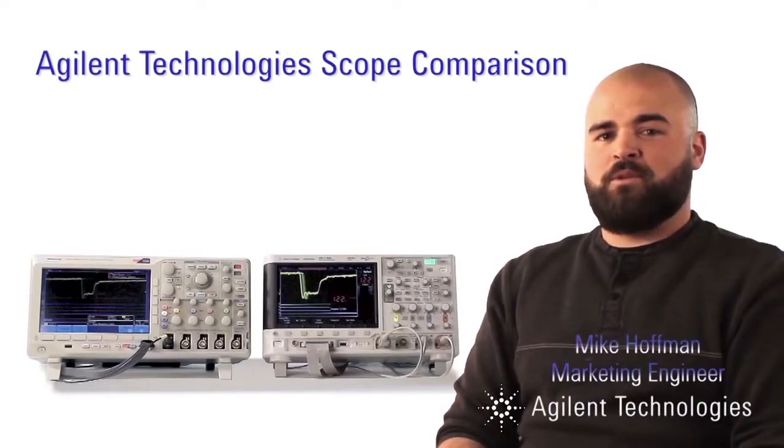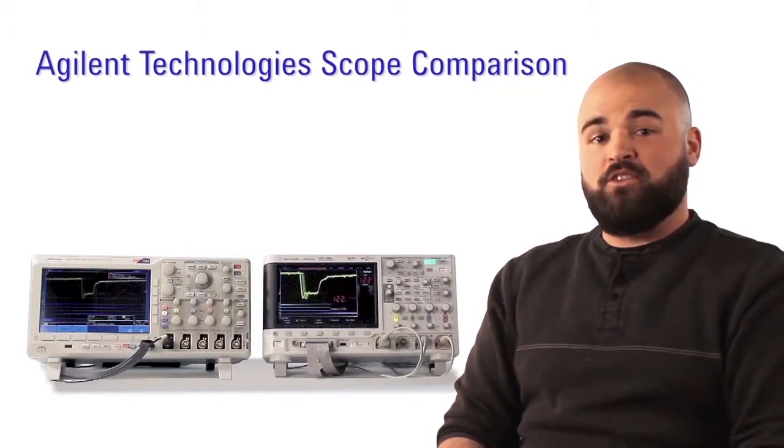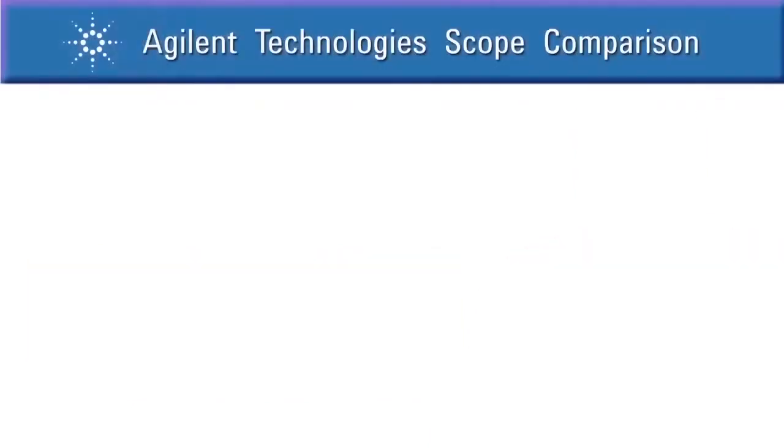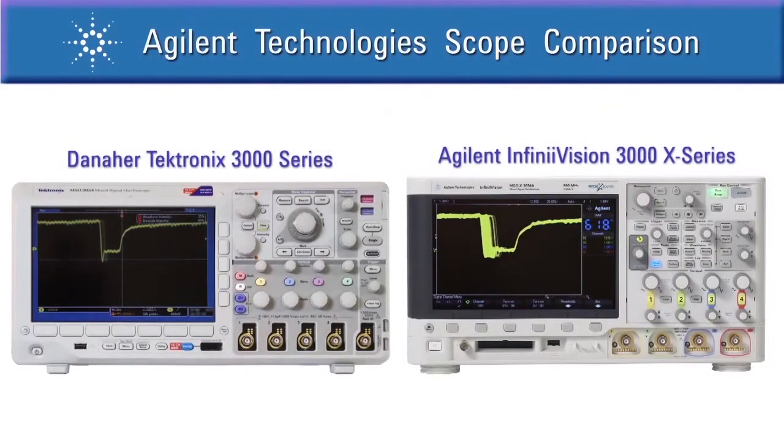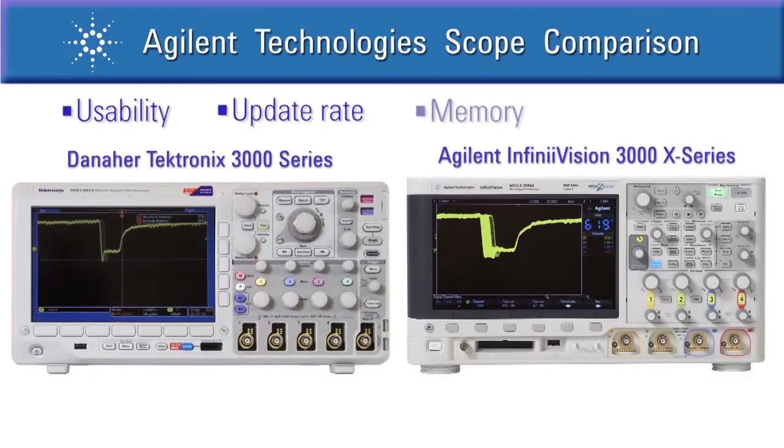Hello, my name is Mike Hoffman, Product Marketing Engineer with Agilent Technologies. In this video, we will compare the Agilent 3000X Series and the Tektronix 3000 Series oscilloscopes. We'll look at usability, update rate, memory, and system architectures of each scope. Let's begin.